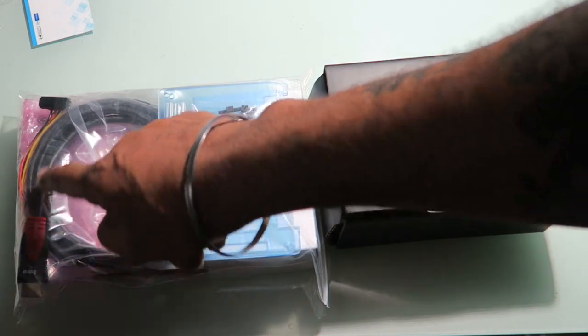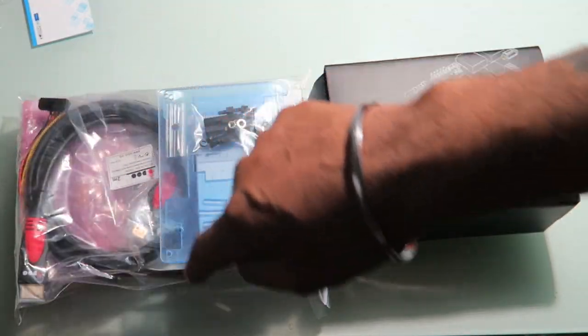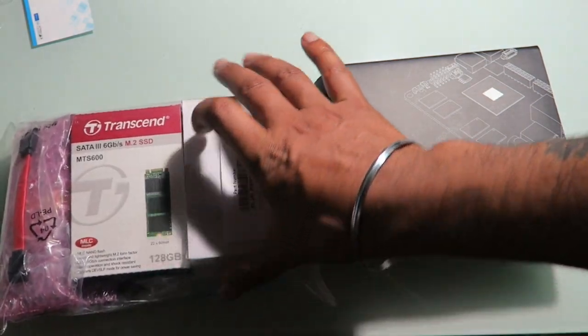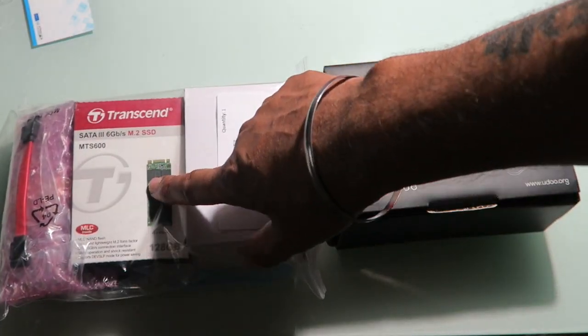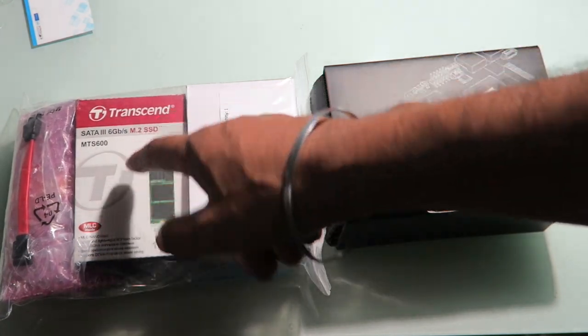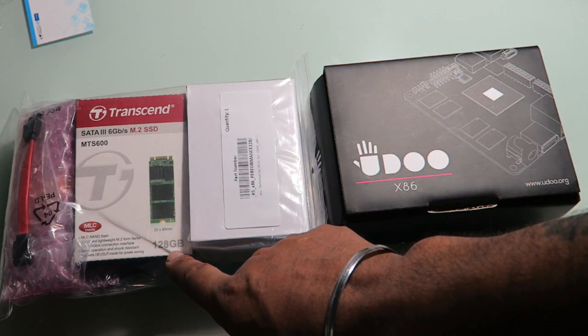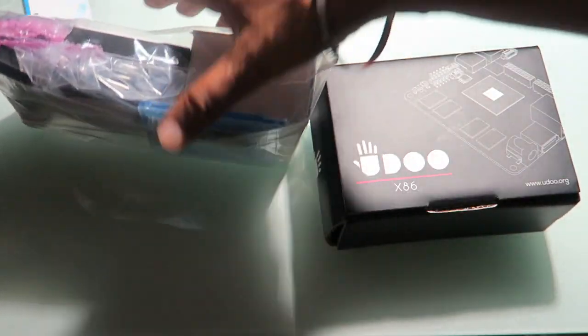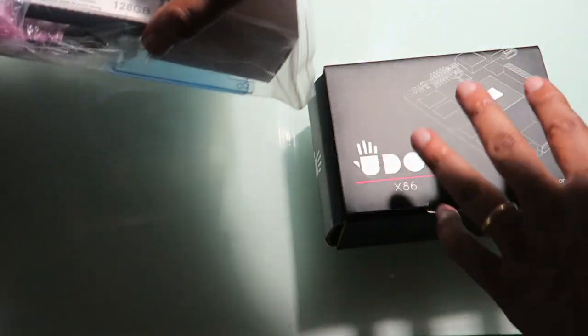We've got a case, HDMI cable, and a power cable for the storage. I bought some storage with this, which is this SSD storage, 128 gigabytes. There's a SATA connector as well. Let's put that aside and look at the box.